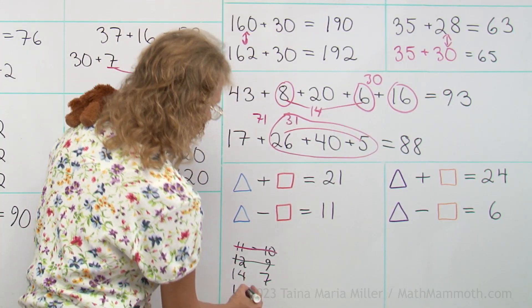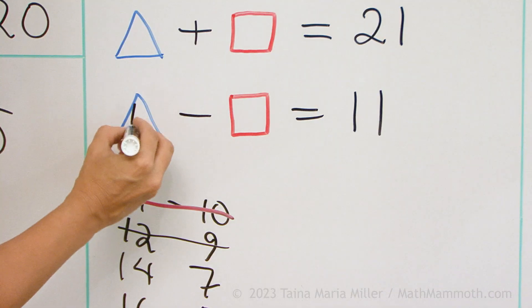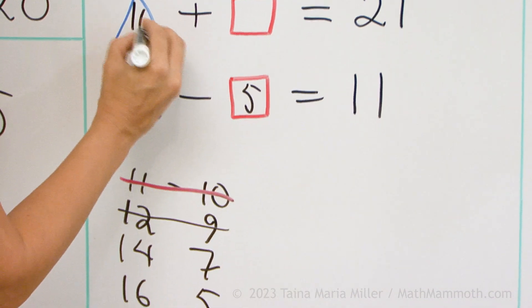How about 16 and 5? Yeah, that matches. 16 minus 5. 16 and 5. That worked.